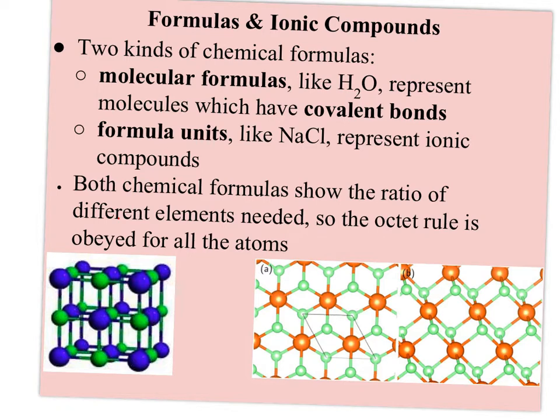And so instead, we use what's called a formula unit. So it shows the ratio, the simplest ratio of the different elements you need so that the octet rule is obeyed for both the positive and the negative ion.